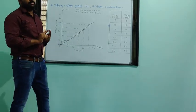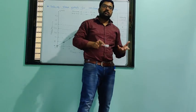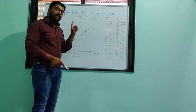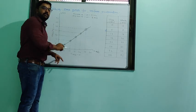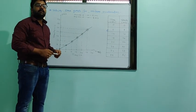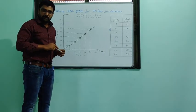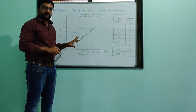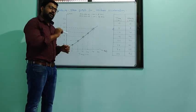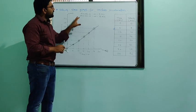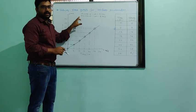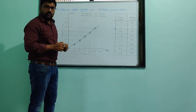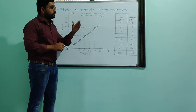You have to remember: when acceleration remains constant — that is, uniform acceleration — the velocity-time graph is always a straight line. This graph is actually given in our textbook and you have to draw it in your notebooks.